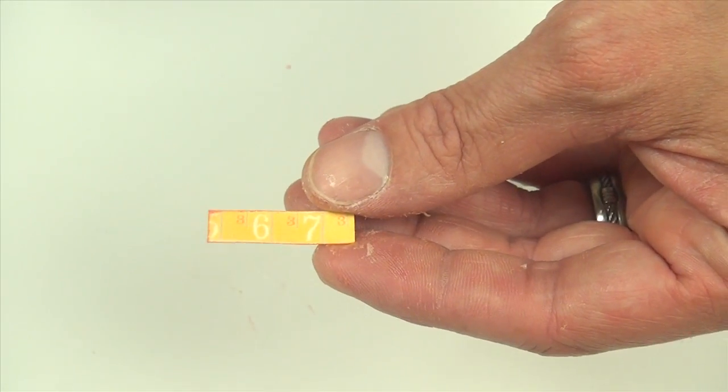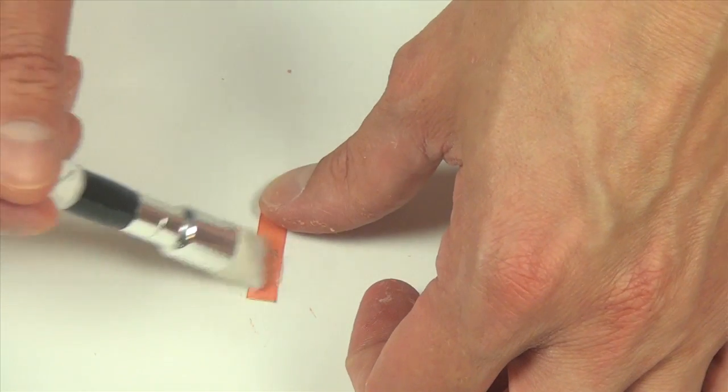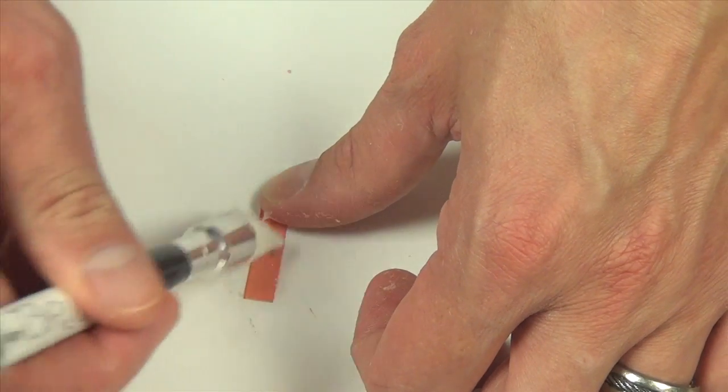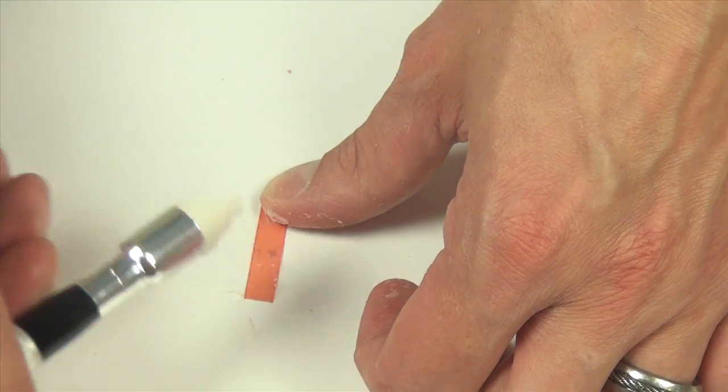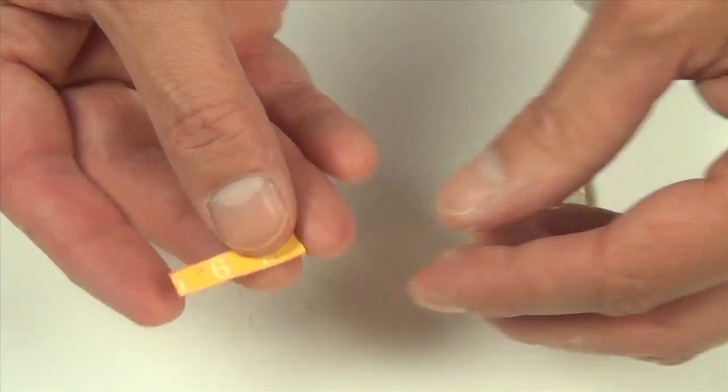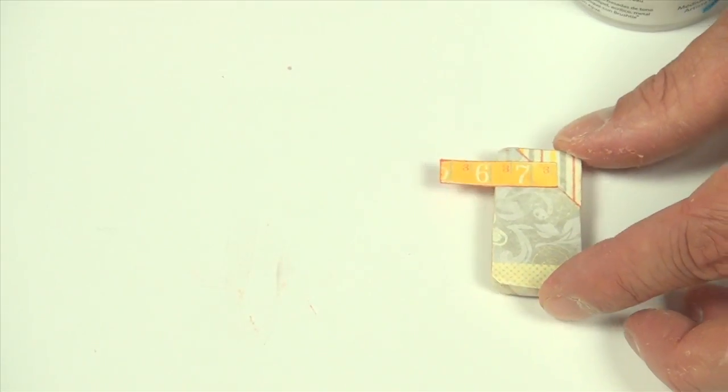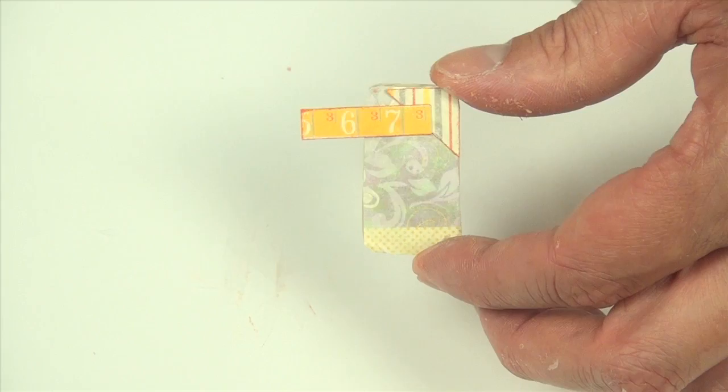Next, we're going to add our little ruler piece. Again, I'm just going to flip this over on the back and add a little bit of creative medium onto it. I also edged this piece with our Memento Luxe in the Morocco color. So now I'm just going to line this up right towards the top, a little bit off center.